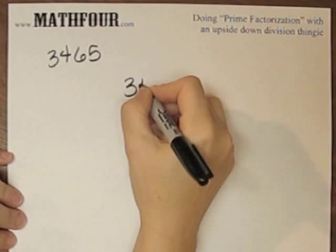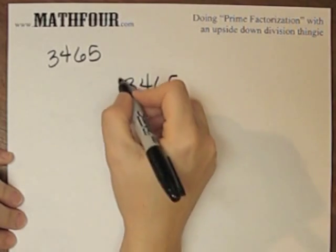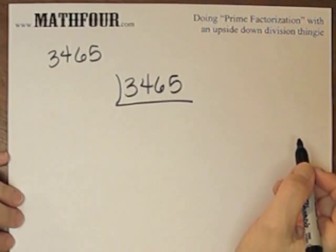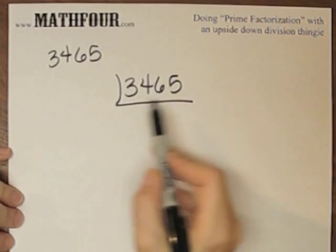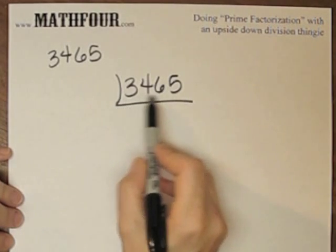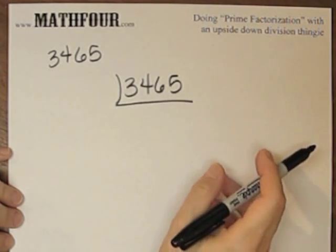We know what the answer is because we did it with the factor tree, but I'm going to do it with the upside-down division thingy. So, as in the previous video, you look at the number and go, okay, what is a prime number that goes into it?